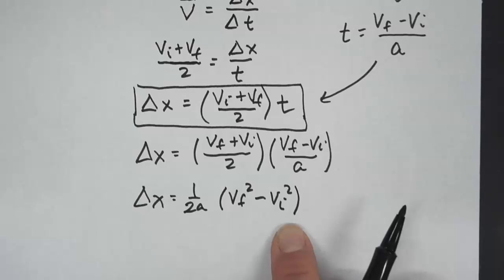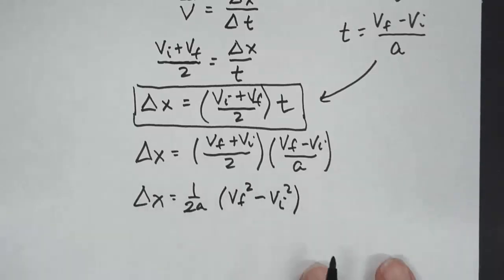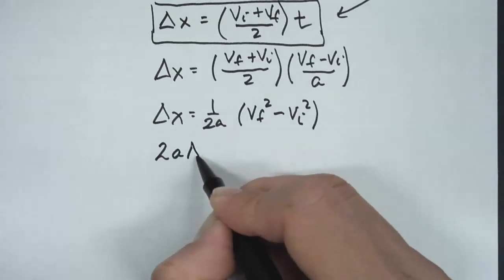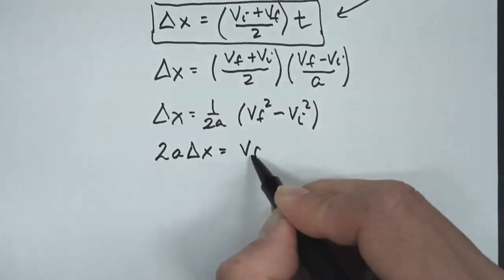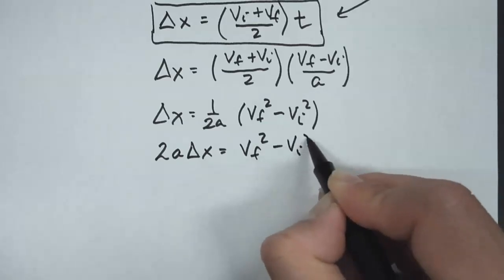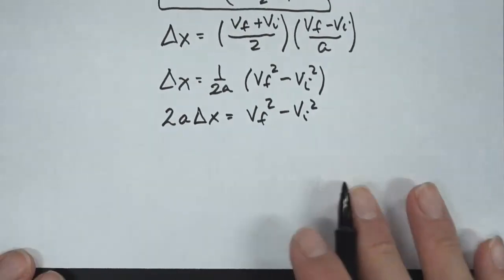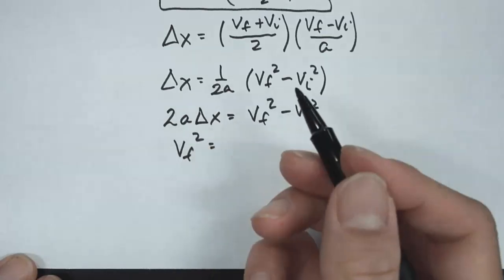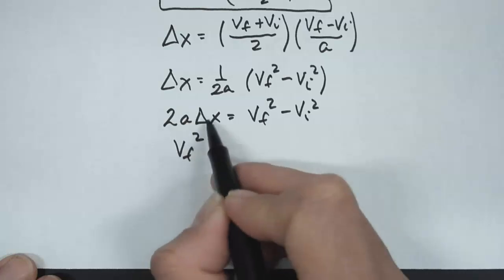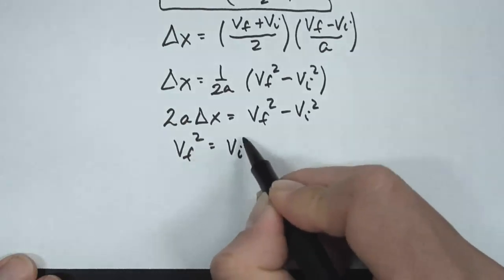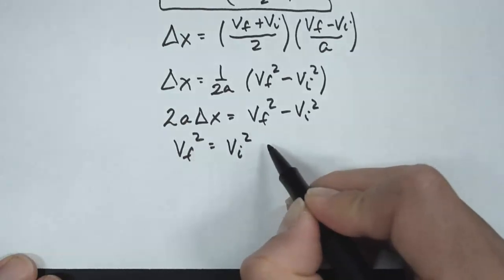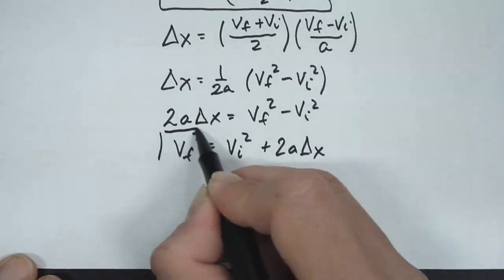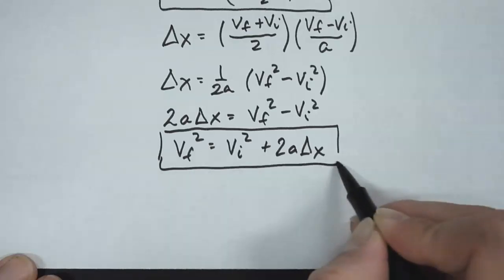And then we're going to move the 2a over, so I'm going to move the 2a over, so I get 2a delta x equals vf squared minus vi squared, and then I'm solving for vf squared. So vf squared is equal to, I'm just going to flip it around, move vi with this here, so I get vi squared plus 2a delta x. And so this is going to be your fourth kinematic equation.